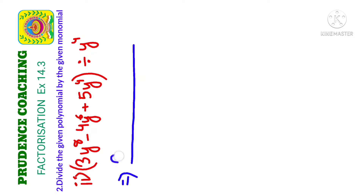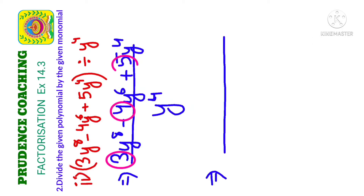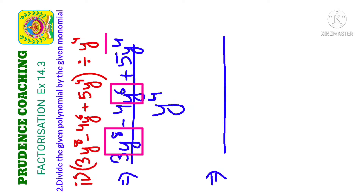Let's start with the next sum. We are going to divide the polynomial 3y⁸ minus 4y⁶ plus 5y⁴ by the monomial y⁴. In the numerator, the coefficients are 3, 4, and 5, and the HCF of 3, 4, and 5 is 1, so we cannot take a number as common. However, we have y⁸, y⁶, and y⁴ — the minimum power of y across all terms is 4, so we take y⁴ as common.